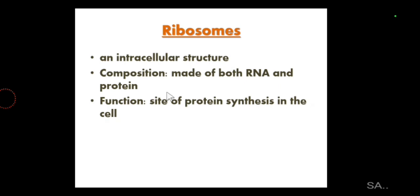Ribosomes are intracellular structures, meaning they are present inside the cell. They are found inside both types of cells: the prokaryotic cell as well as the eukaryotic cell. They are found in the cytoplasm or attached to the endoplasmic reticulum, making it rough — the rough endoplasmic reticulum. In prokaryotic cells, since there is no endoplasmic reticulum, they are only found in the cytoplasm. In eukaryotic cells, they are found both in the cytoplasm and associated with the rough endoplasmic reticulum.